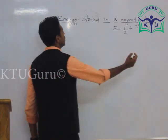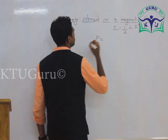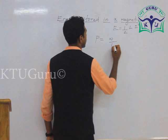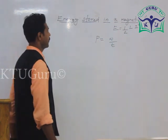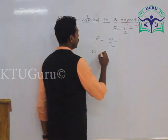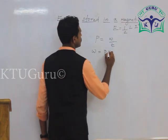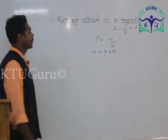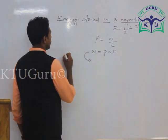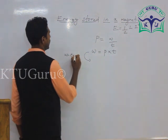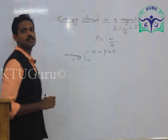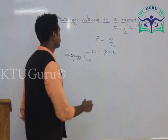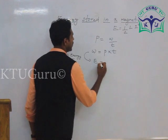Power is the rate of doing work, that means work done divided by time. In this expression, work done equals power into time — this is a very basic relation. According to the work-energy theorem, work done is converted to energy; work and energy have the same dimensions, so we can write energy equal to power into time.